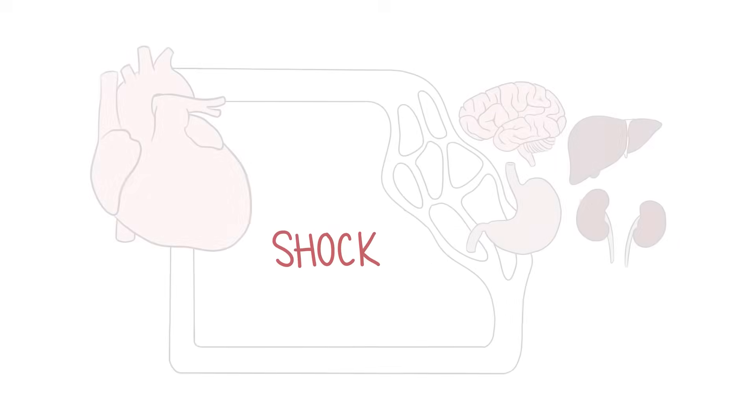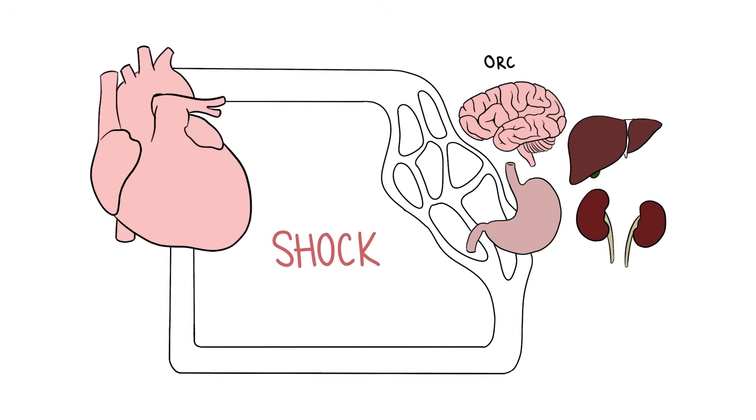Hello, in this video we're going to talk about shock. Shock occurs when the body's organs and tissues don't receive enough blood and oxygen. There are many different types of shock, but they're all categorized by a sudden drop in blood pressure and inadequate blood supply to organs and tissues, leading to hypoxia.